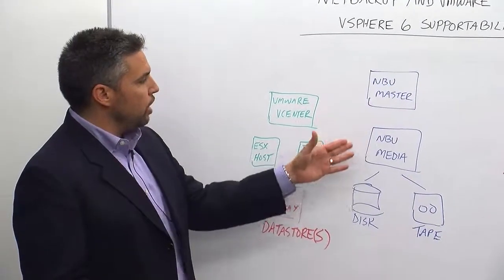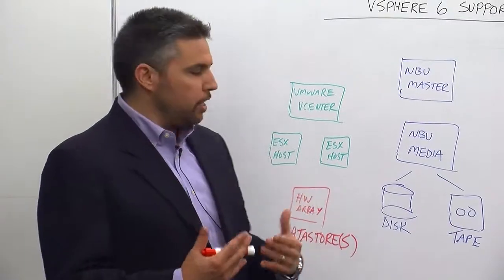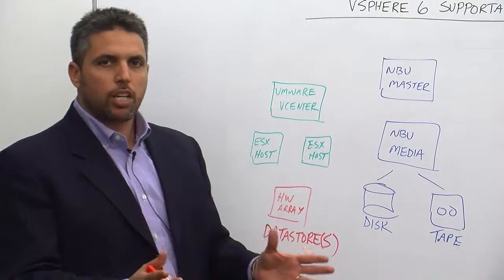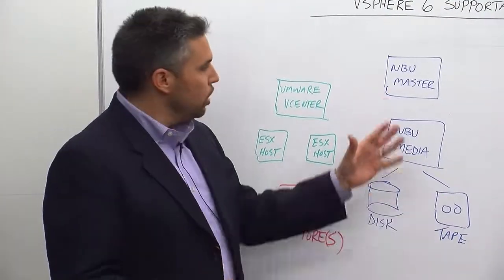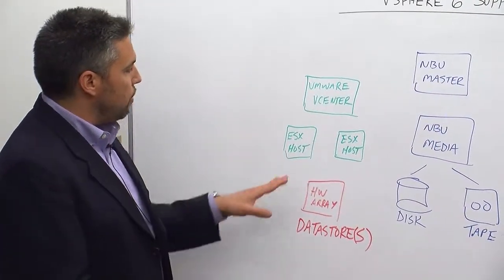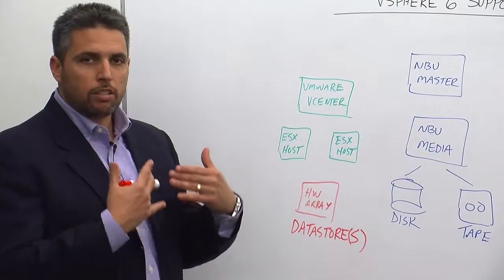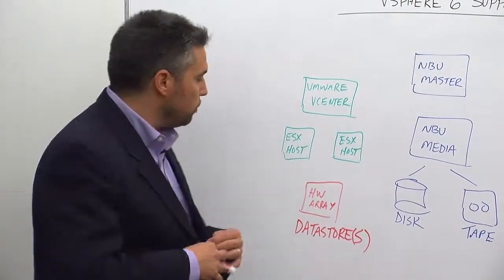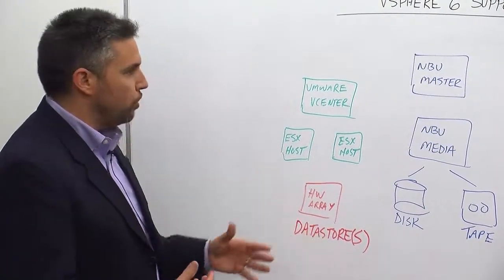I have my NetBackup master server and my media server as well. This could be standalone, build your own, or this could be the NetBackup appliance. I've got my disk and tape devices attached to that media server. This could be a large-scale NetBackup environment with multiple media servers, or this could be just really simple — one master server, one media server. On the left-hand side, I've got my vCenter environment, my ESX host, my virtual machines, and my hardware array. This hardware array is going to provide the datastore support for those virtual machines.